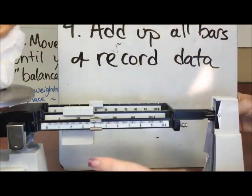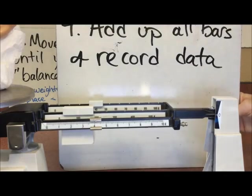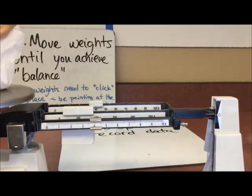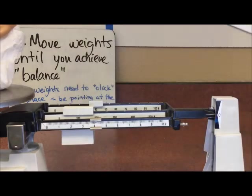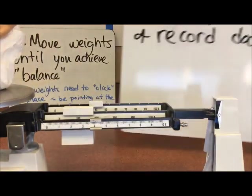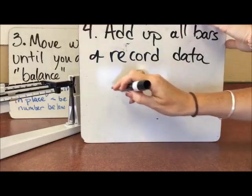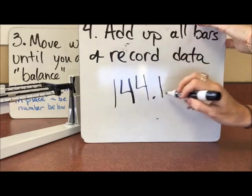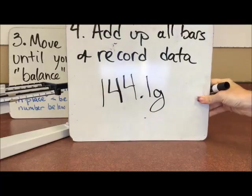So we have 144. 144, and then we're 1 slashy over from the 4. So this is 144.1, which we would record on our data tables as 144.1 grams. Okay, and that's what you would put on your data table.